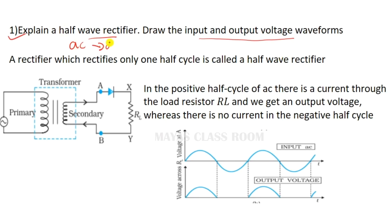Rectification is the process of converting AC to DC. The half-wave rectifier rectifies only one half-cycle of AC.